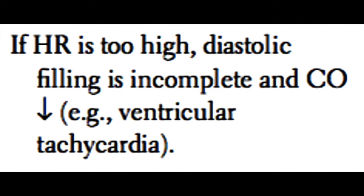If the heart rate becomes too high, diastolic filling will be incomplete — the heart will not have enough time during diastole to completely fill the left ventricle, and cardiac output will diminish. An example of this is during ventricular tachycardia, when heart rate can approach 200 to 300 beats per minute. If this occurs, the heart does not have enough time to fill between beats, and therefore cardiac output will drop, and blood pressure will drop as well.